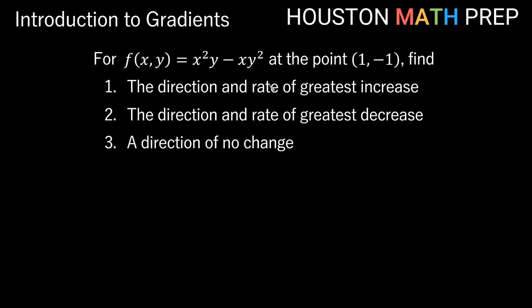Let's keep that in mind as we look at our next example: f(x, y) = x²y - xy², focusing on the point (1, -1). We want to find three things at this point: the direction and rate of greatest increase, the direction and rate of greatest decrease, and a direction where there is no change — neither uphill nor downhill. The direction of greatest increase should be our gradient evaluated at (1, -1).